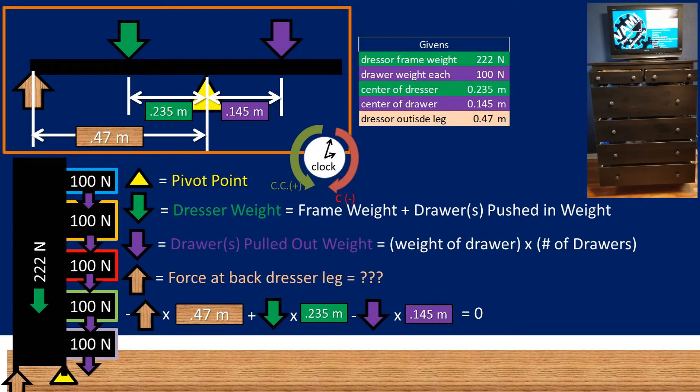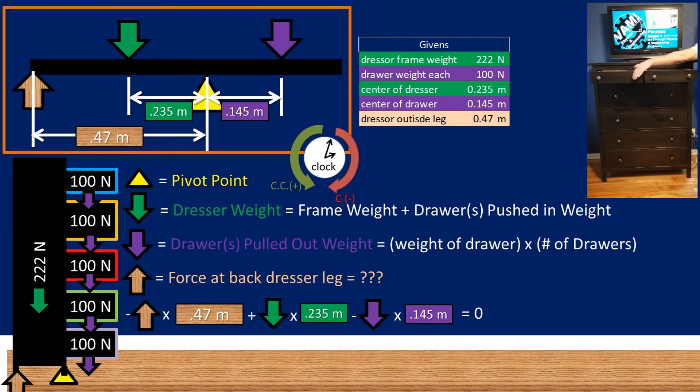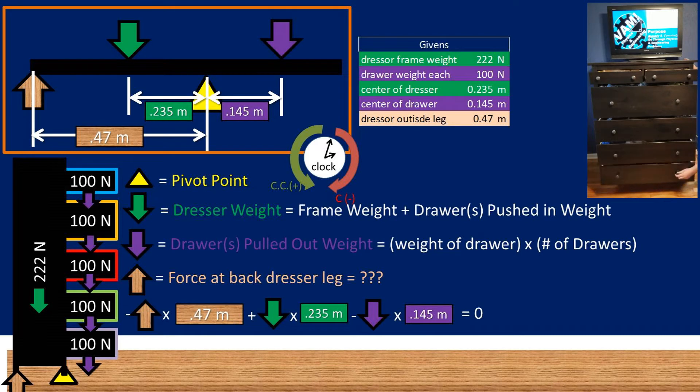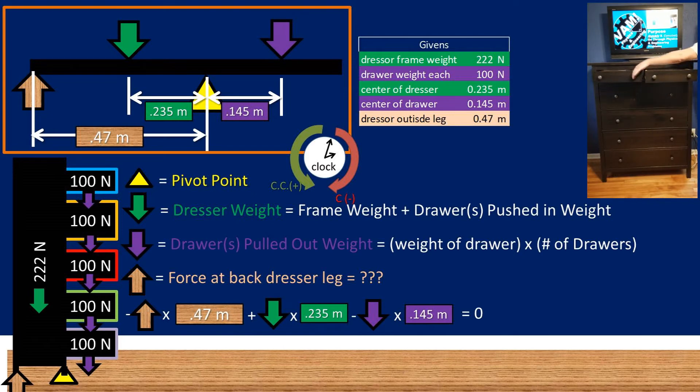As we add in drawers, if the value of the floor pushing back goes from positive to negative, then we have the number of drawers that it will take to tip over the dresser. So putting all those values into the sum of torque equation, we have that the negative torque from the floor on the back of the dresser plus the torque from the frame and pushed in drawers minus the torque from the pulled out drawers equals zero.